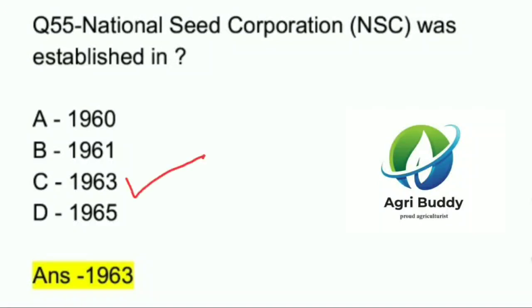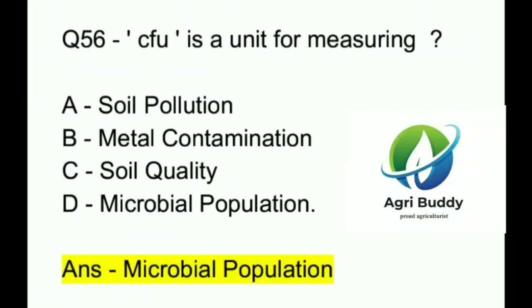Question 56. CFU is a unit for measuring? A. Soil pollution. B. Metal contamination. C. Soil quality. D. Microbial population. And the answer is Microbial population.